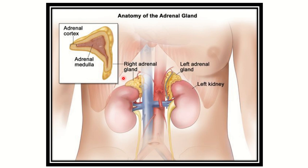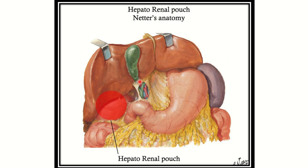At the vertebral level, the right adrenal gland is related to the diaphragm posteriorly. We can also see the hepatorenal pouch in this area. Just above the right kidney, there is the right adrenal gland, so the right adrenal gland is also related to the hepatorenal pouch.